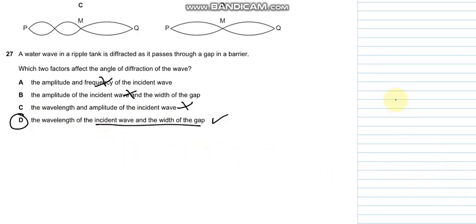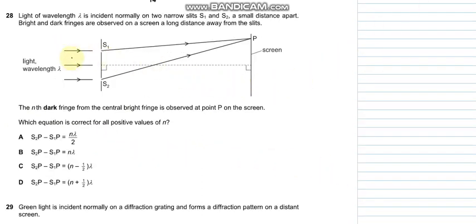Question number 28 says that light of wavelength lambda is incident on two narrow slits S1 and S2. The nth dark fringe from the central fringe is at point P on the screen. Which equation is correct for all positive values of n? For n equals 1, 2, and 3, we have to see for the dark fringe. For dark fringe it is destructive interference.